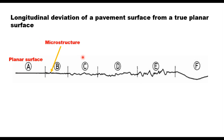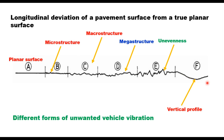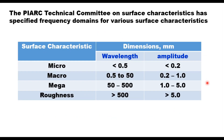The deviation can be a microstructure, macrostructure, or mega structure, as well as unevenness. The vertical profile at the end is not road roughness — it is the natural gradient. These roughnesses create different forms of unwanted vibrations in the vehicle. The PIARC technical committee on surface characteristics has specified frequency domains for various surface characteristics.